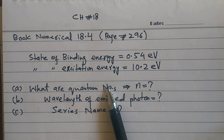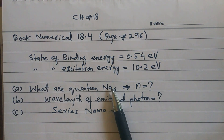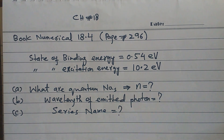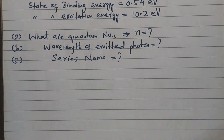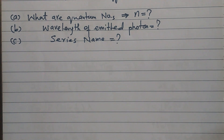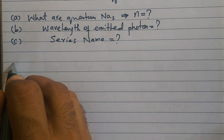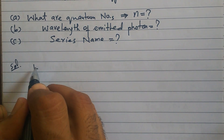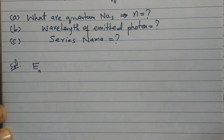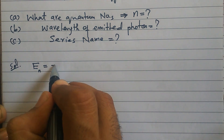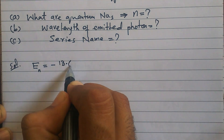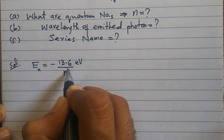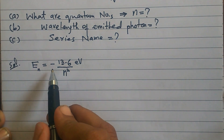The first part asks for the quantum number n. As I explained in the theory, we have proved through derivation that the energy in any state equals minus 13.6 divided by n squared, in electron volts.